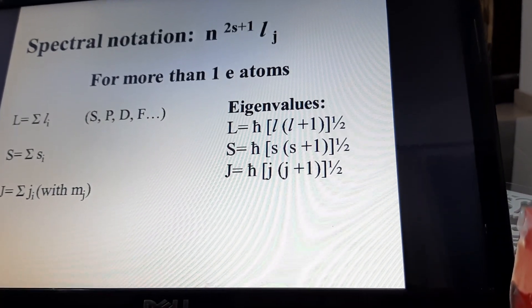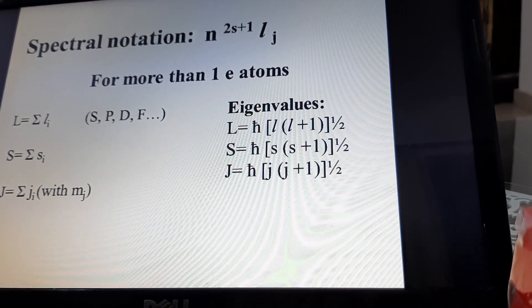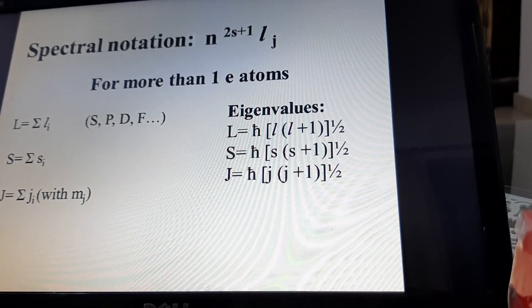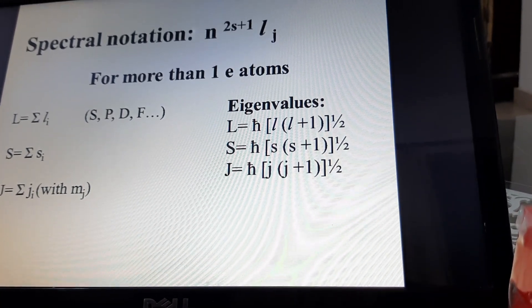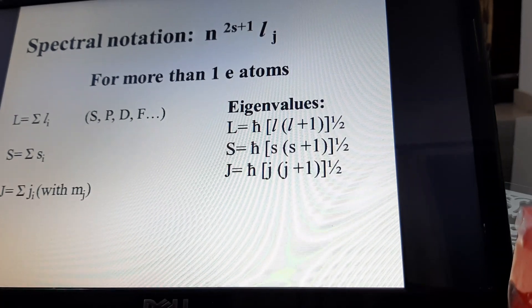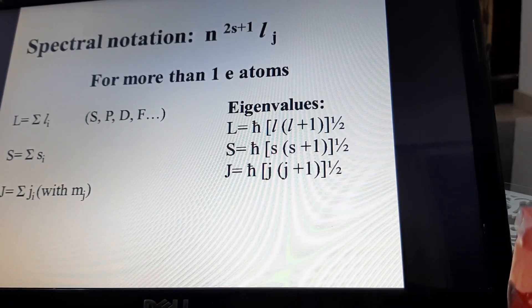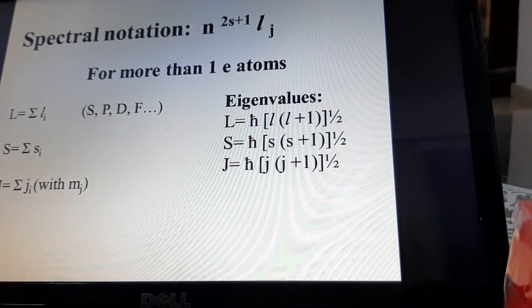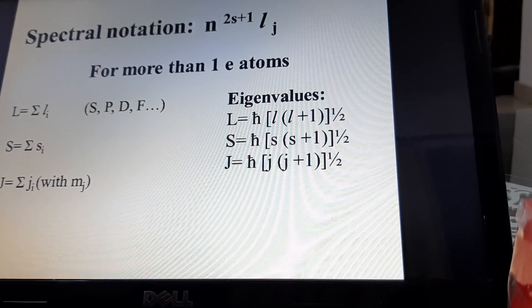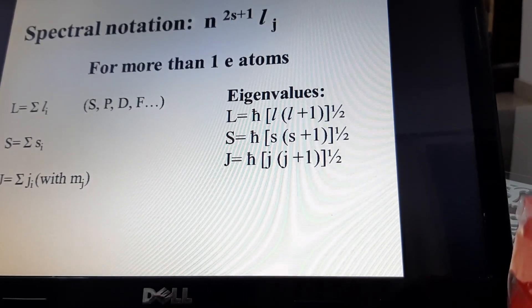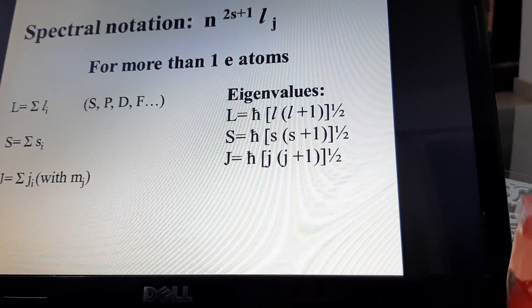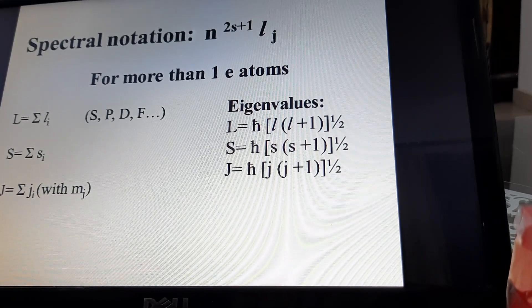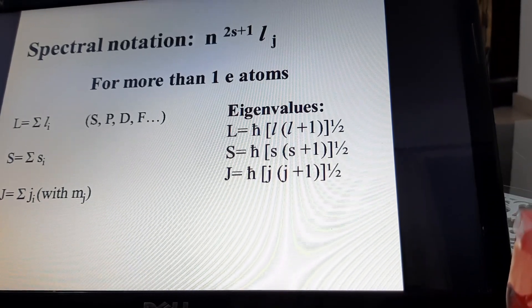After that, we will discuss spectral lines. Spectral lines are the lines produced by the transition of electrons from a higher energy level to a lower energy level. These spectral lines can be noted by N, where 2 is called multiplicity, L is the orbital quantum number, and J is the total quantum number. For more than one electron atoms, the value of total angular momentum L is the summation of individual L quantum numbers, written as S, P, D, F.